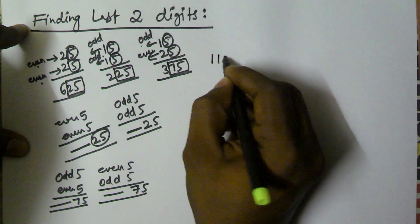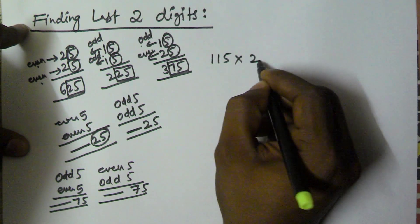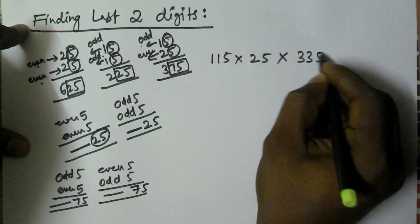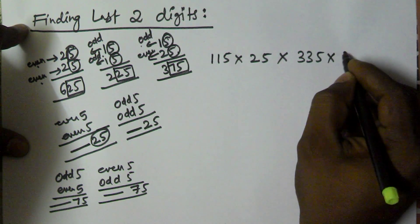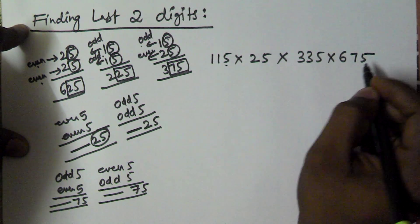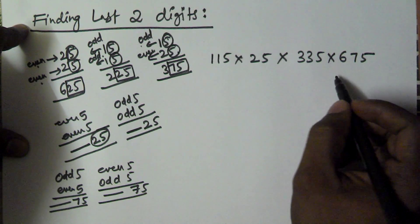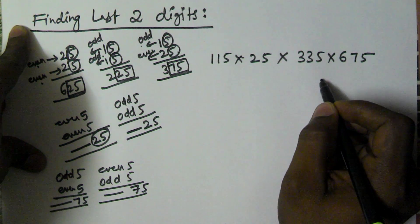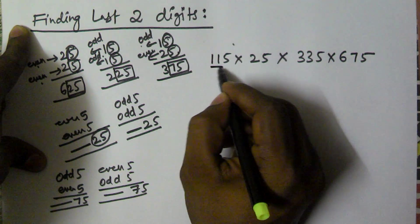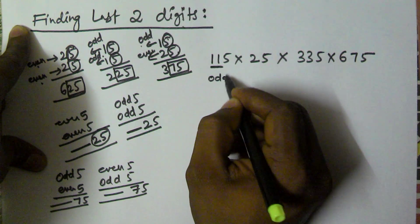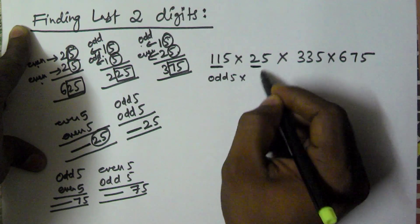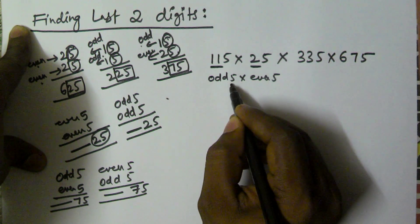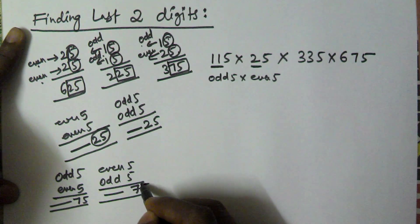Let us consider 115 into 25 into 335 into 675. We have to find the last 2 digits of this multiplication. Here 115 is odd 5, 25 is odd 5, 335 is odd 5, and 675 is even 5. So odd 5 into even 5 — what are the last 2 digits?